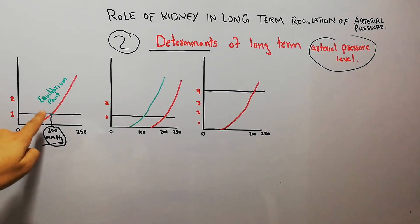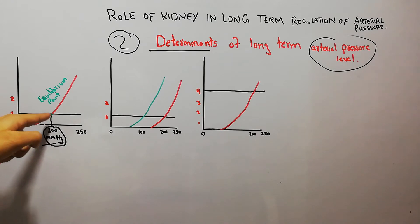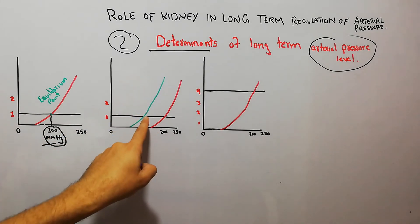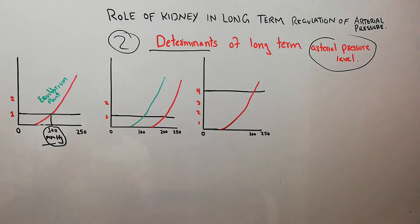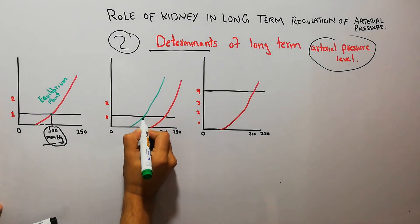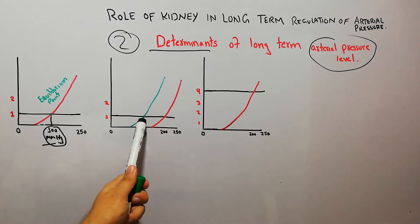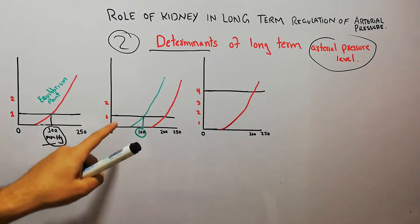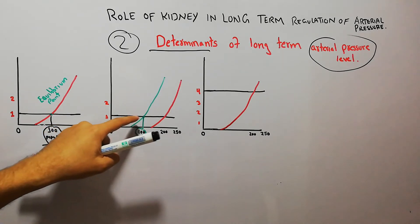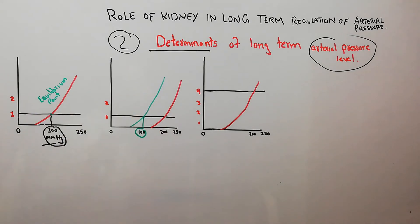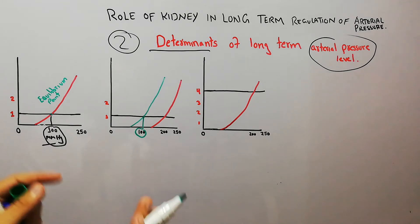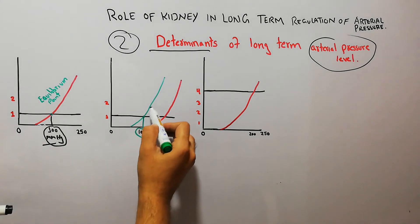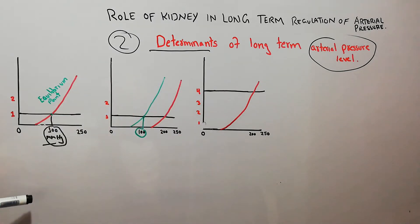We will explain this with two further diagrams. Normally, when the intake of water and salt and the renal functions are normal, the equilibrium point is at 100 mmHg. In the diagram, the black color line shows the intake of salt and water, and the green and red color lines are the renal function curves, showing differences in renal function.